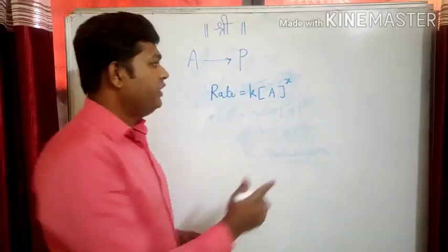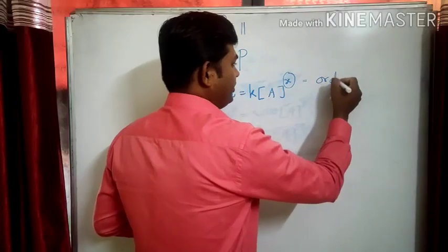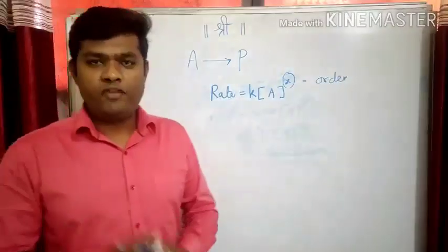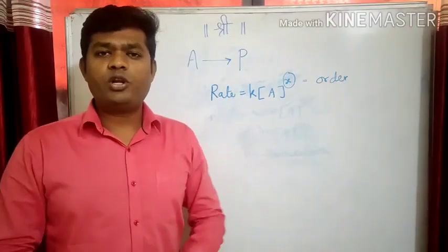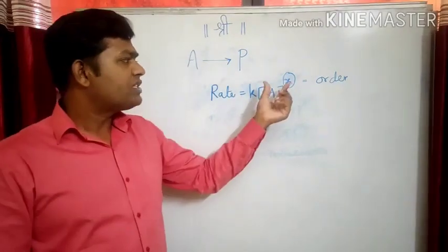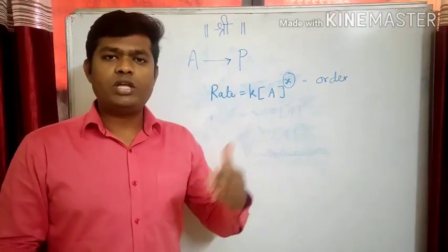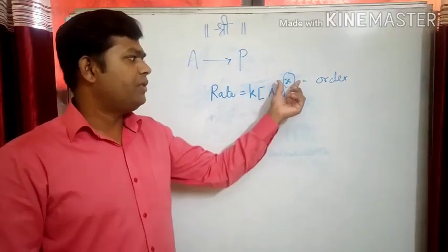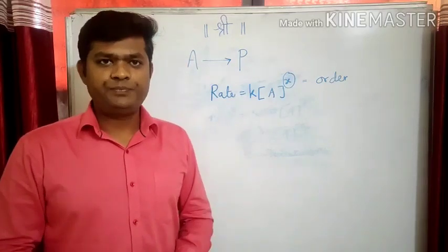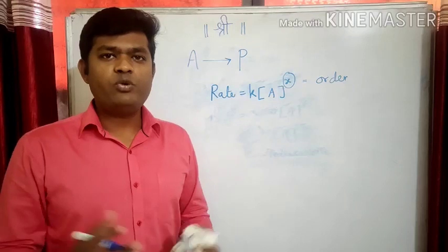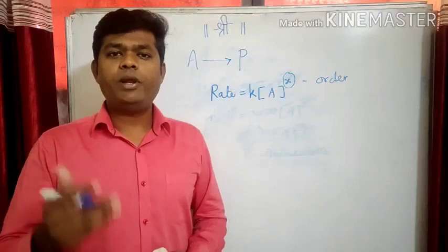This power written here is called the order of reaction. The power x is called the order of reaction. The definition of order of reaction is: the sum of the powers to which the concentration of reactants is raised is known as the order of reaction. To understand this order completely, we have to consider experiments, because order of reaction is an experimentally determined quantity.